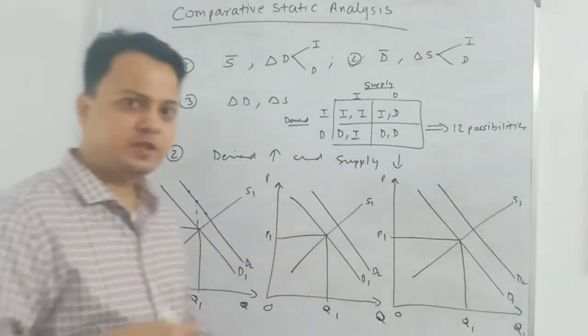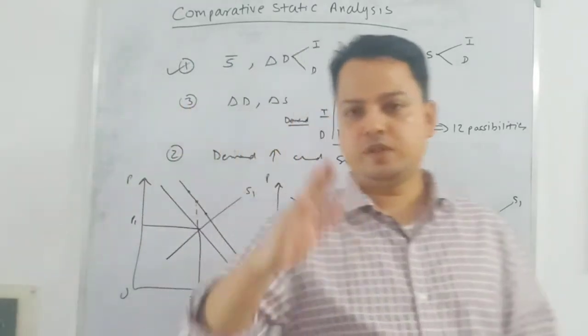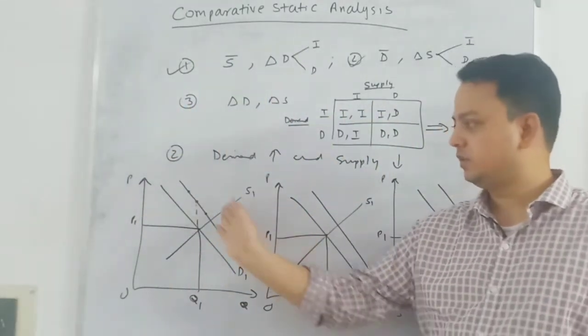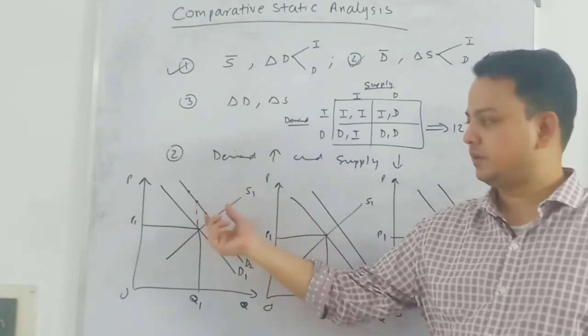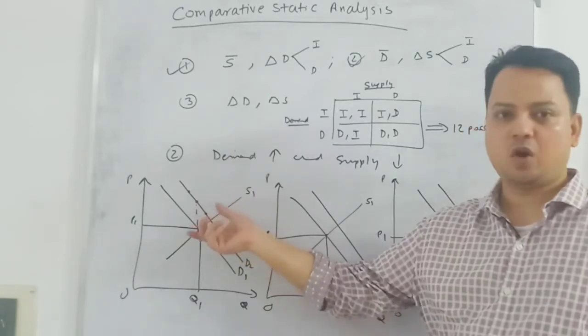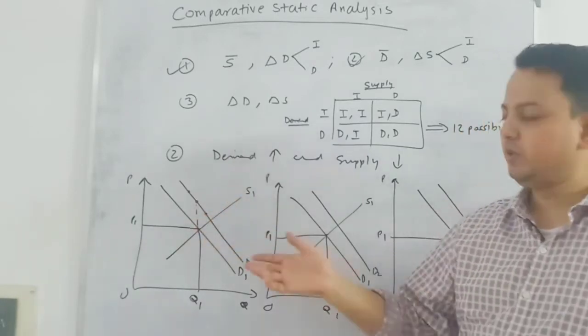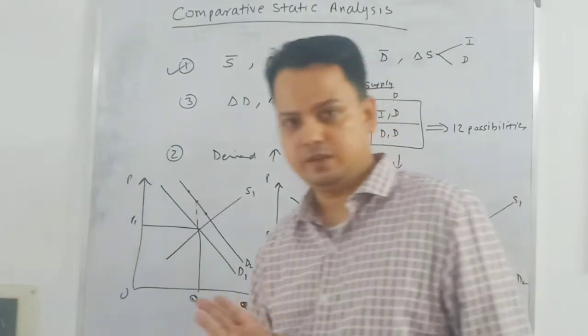In the third case, quantity is lower when the supply curve shifts by quite a large amount — quantity is lower but price is higher. So in this case, what we see is that price will be higher at the new equilibrium. Quantity can remain the same, or it can increase or decrease depending upon the shift in the supply curve.